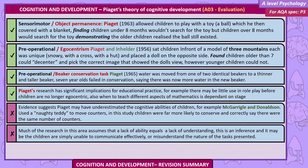Evaluations — Sensorimotor: Object permanence. Piaget (1963) allowed children to play with a toy ball, which he then covered with a blanket. He found children under eight months wouldn't search for the toy, but children over eight months would search for the toy, demonstrating that older children realised the ball still existed.